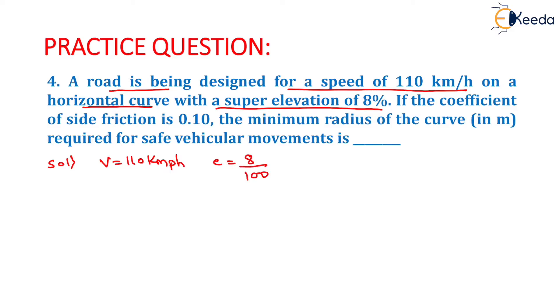If the coefficient of side friction, that is lateral friction, is given as 0.10, it means that the value of small f will be equal to 0.10. The minimum radius of curve in meters required for safe vehicular movement is what we need to find.